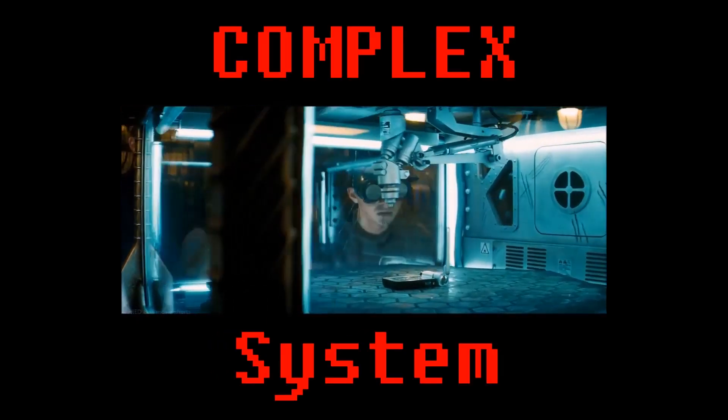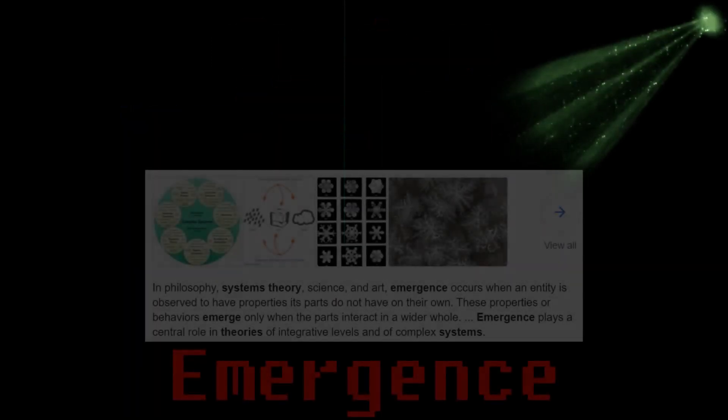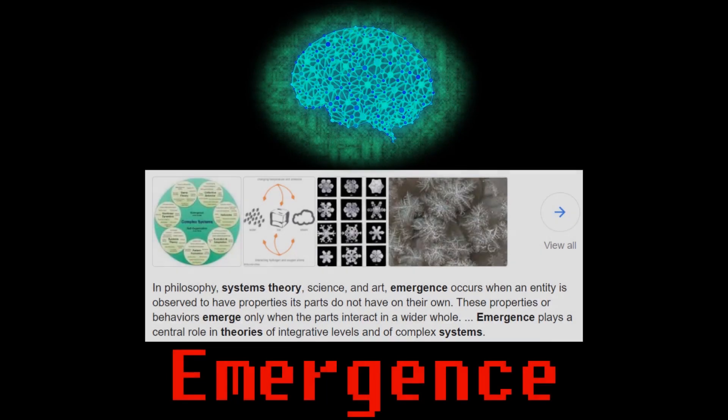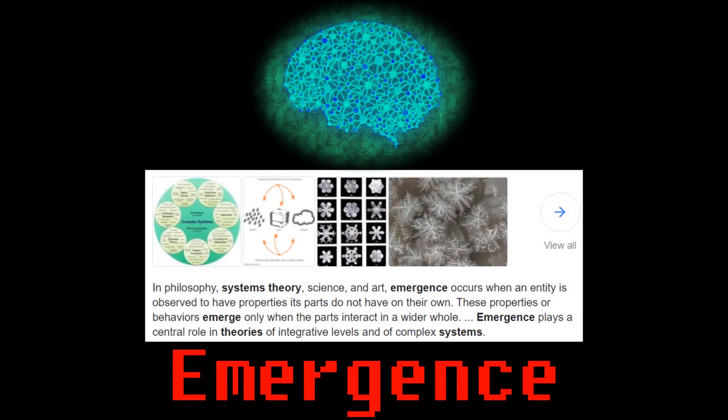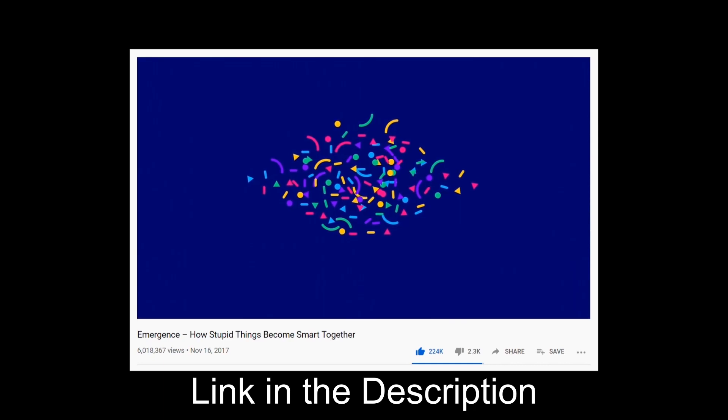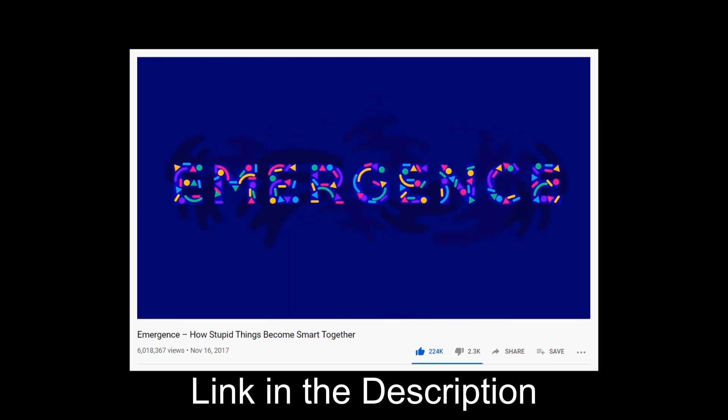Smartphones are pretty complex systems. In system theory there is a phenomena called emergence, which simply means when lots of simple things together make up a complex thing with new properties. The YouTube channel Kurzgesagt has made a pretty impressive video on this topic. You should check it out.